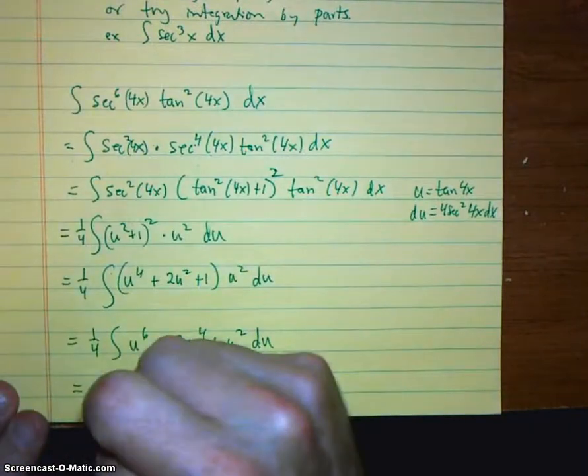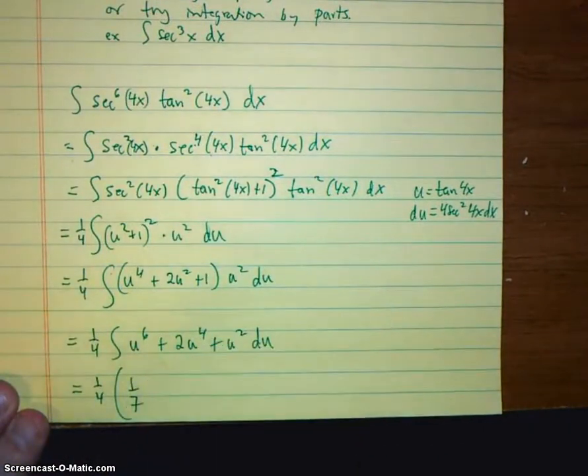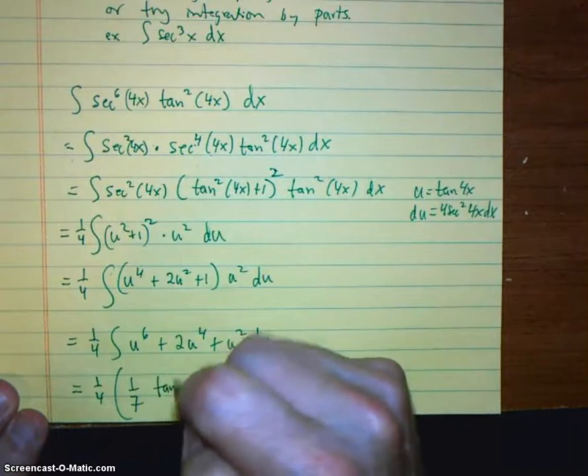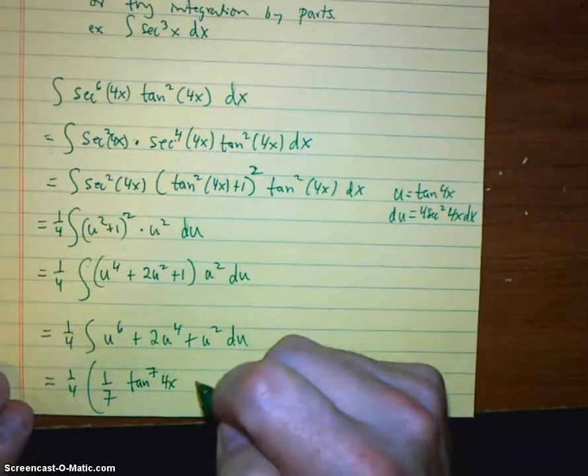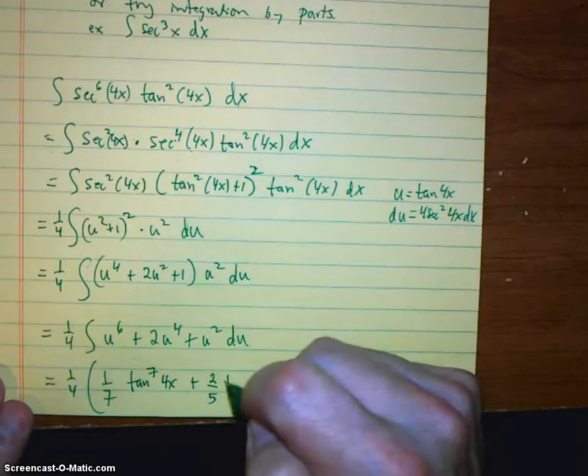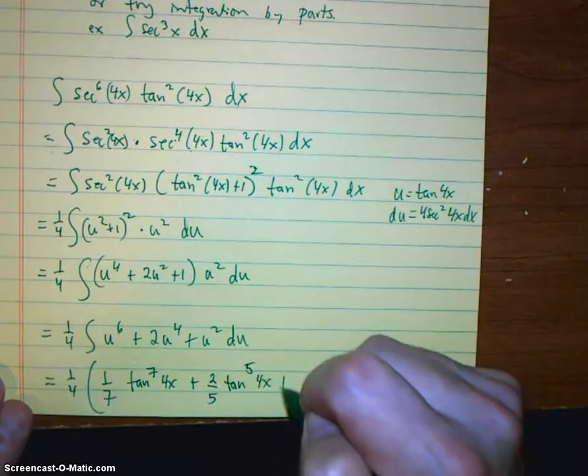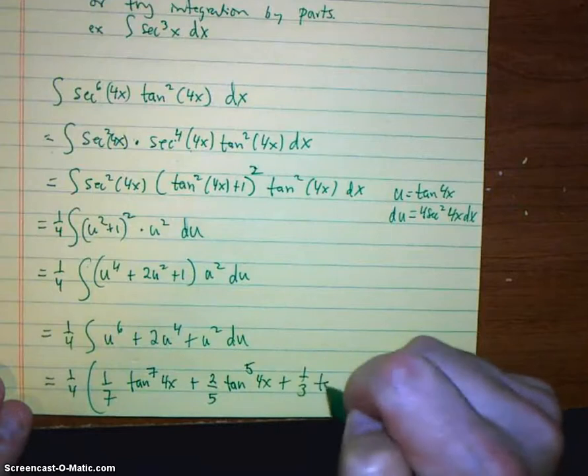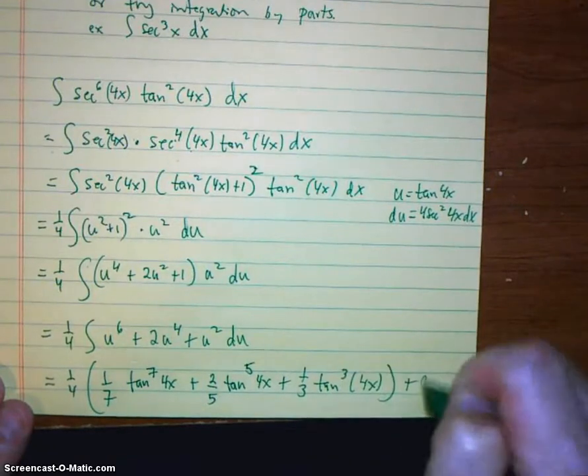So finally answer. I've got the one-quarter. Then I'm going to have one-seventh tangent to the seventh of 4x plus 2 fifths tangent to the fifth of 4x plus 1 third tangent cubed 4x plus c.